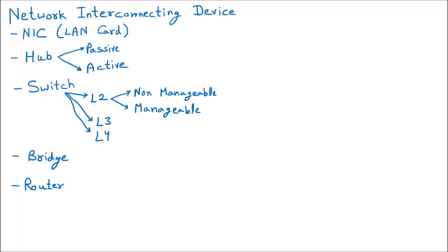Now we are going to discuss the next topic under the network interacting devices, and that is gateway. Now to understand the gateway, first of all we are taking one example to make you understand.